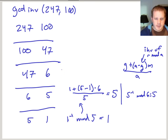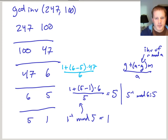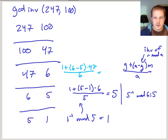Moving up to the next level: now a=6, y=5 (from below), m=47. Applying the formula: 1 + (6 − 5) × 47 / 6 = 1 + 47/6... giving 48/6 = 8. We can verify: 6 × 8 = 48, and 48 mod 47 = 1. So the inverse of 6 mod 47 is 8.